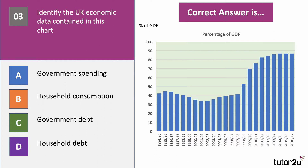The data is expressed as a share of GDP. The correct answer is C — it's government debt as a share of national output. There was a significant rise in government debt as the economy went into the last recession, partly because the government was borrowing a huge amount more — the budget deficit peaked at over 10% of GDP — and also due to bailouts of financial organisations and the nationalisation of a number of banks suffering from the global financial crisis.